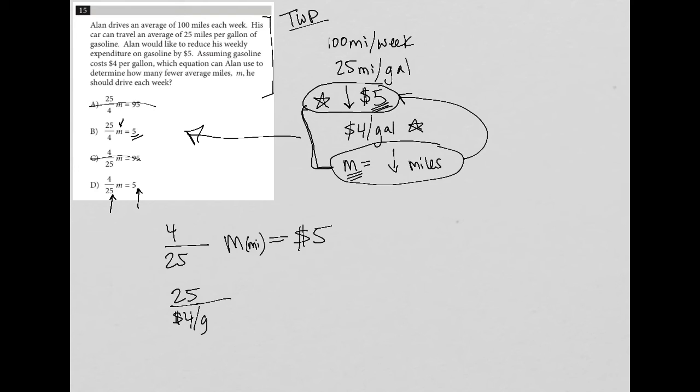So dollars per gallon. And then the twenty five right here is miles per gallon. So this could be miles per gallon or miles per gallon.